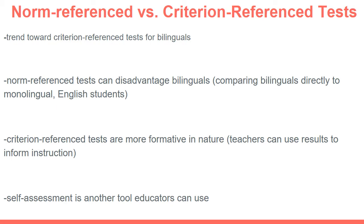A further assessment that instructors sometimes use is self-assessment, where students reflect on their own abilities in their native language and their second language. In the United States, that would most likely be English as their second language. Going back to the formative versus summative nature, norm reference tests are often summative. For example, on the STAR or TELPAS, teachers are actually required not to look at the tests — not only before administering them but even during administration.